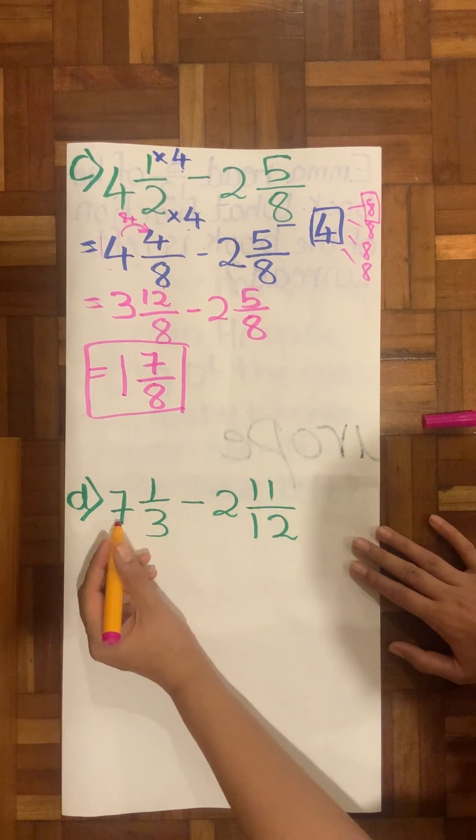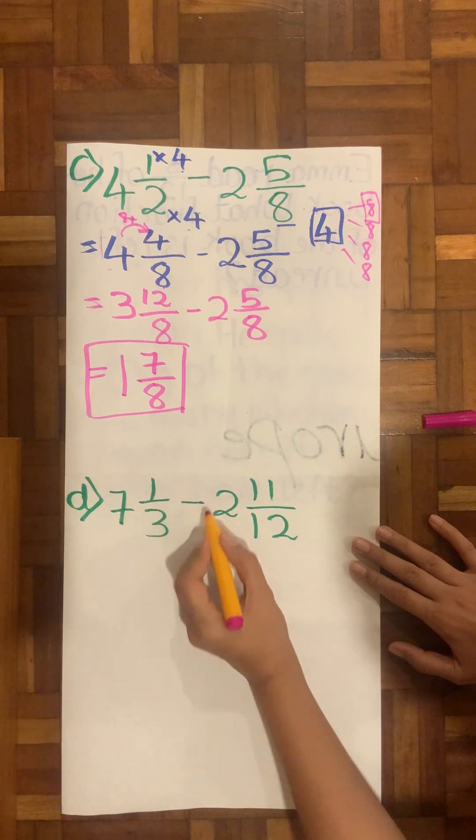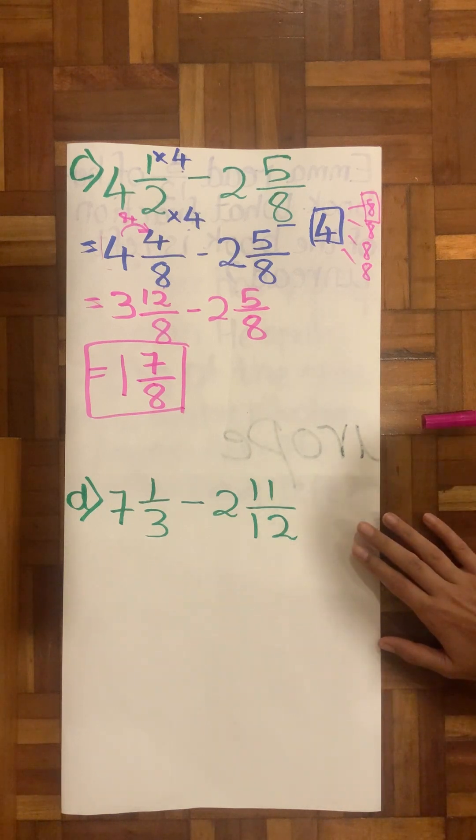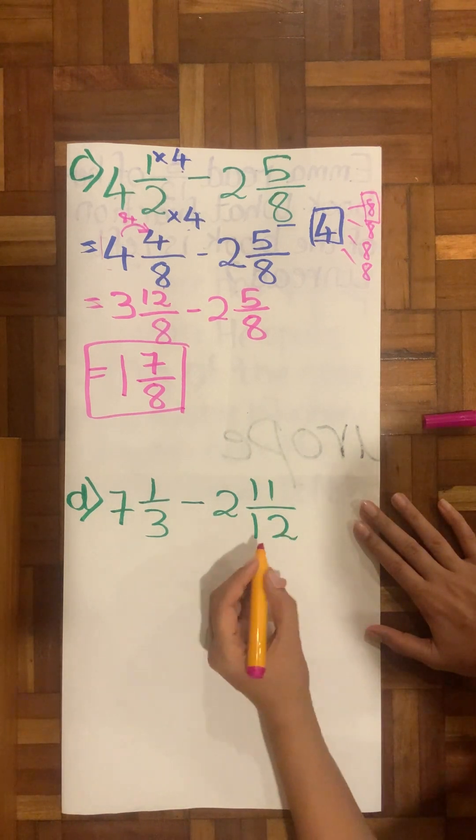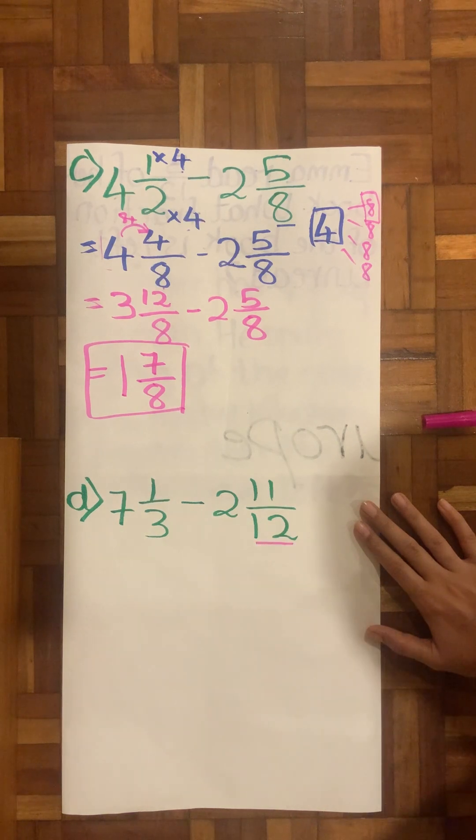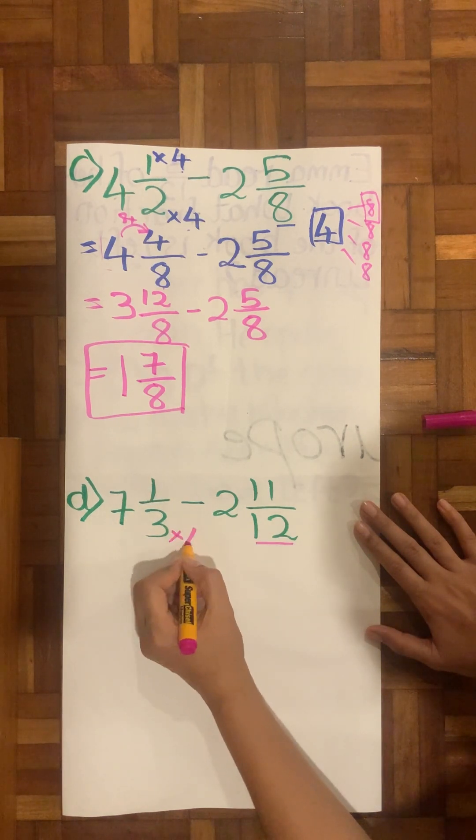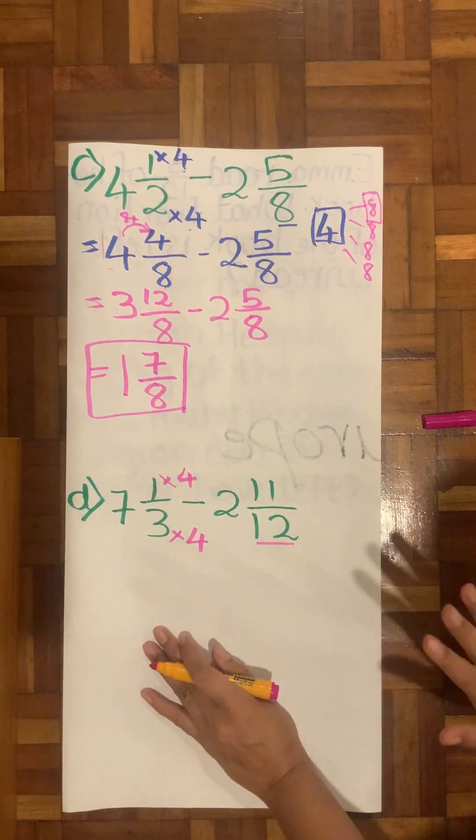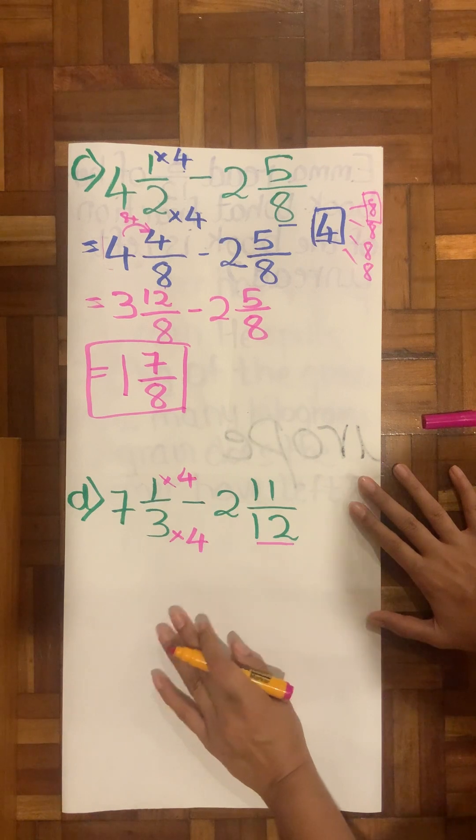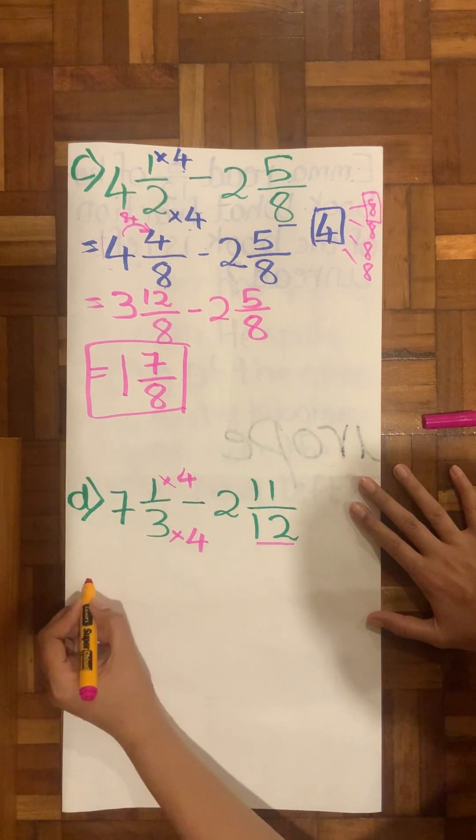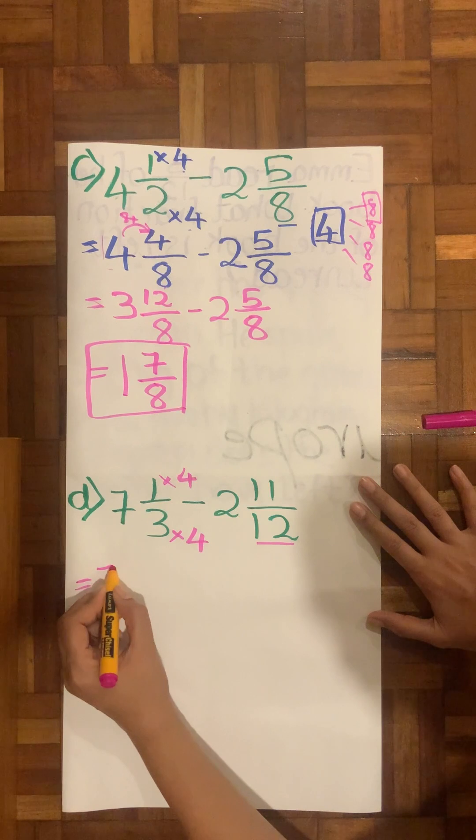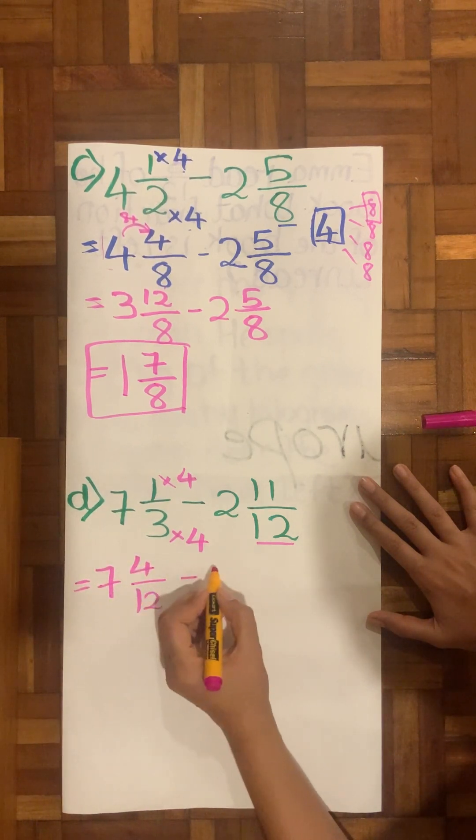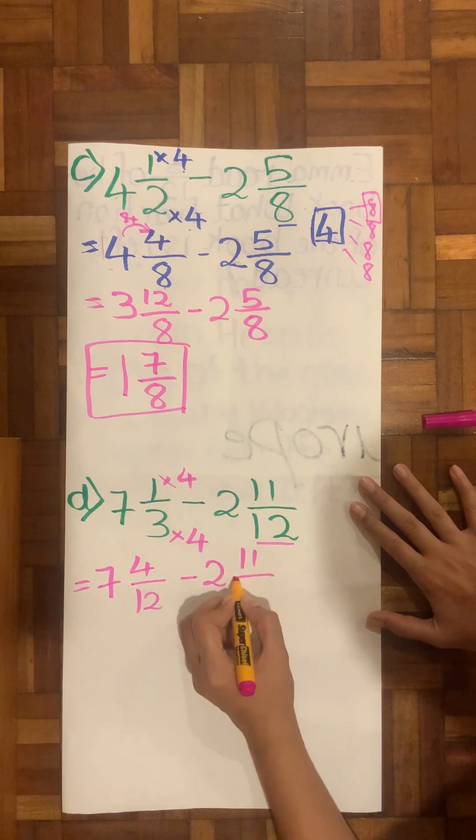Let's look into the next question. Next question says 7 wholes ¹⁄₃ minus 2¹¹⁄₁₂. Again here we will deal with the denominator. The biggest denominator is 12. Therefore this will also be 3 times 4 is 12. Our tables are the key as I say every time. Your tables are the key in order to do any majority of the operations in subtraction.